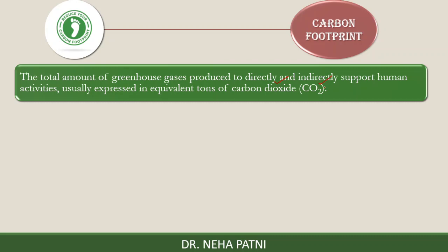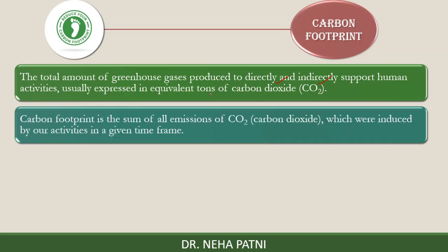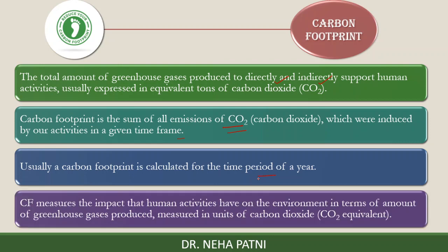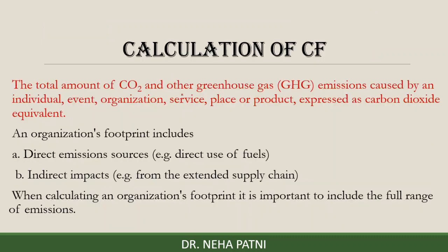Carbon footprint is the total amount of greenhouse gases produced directly and indirectly because of human activities. It is expressed in terms of CO2 equivalent — CO2 is taken as a reference since there are other greenhouse gases as well. So carbon footprint is the sum of all emissions of CO2 induced by our activity in a given time frame, most probably one year. It measures the impact of these activities on the environment in units of CO2 equivalent.